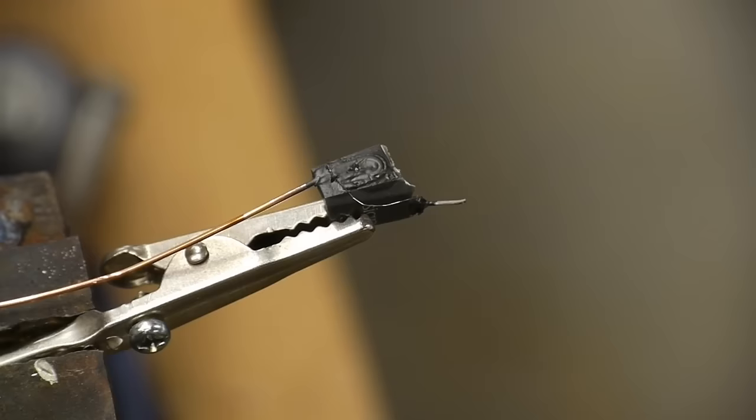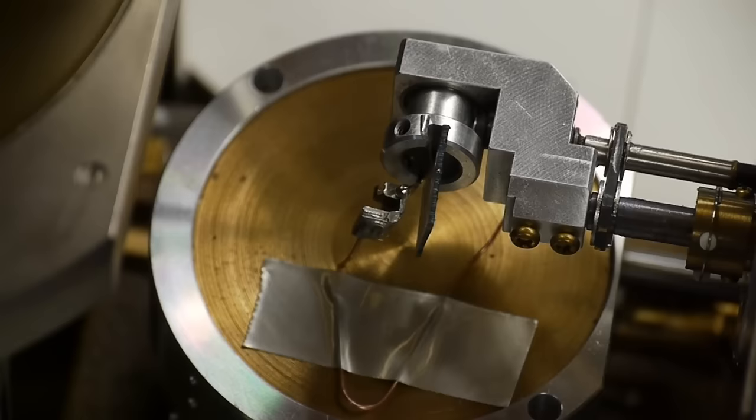Next I needed to make a sort of primitive tone arm that I could put inside the electron microscope chamber so that there would be some amount of tracking allowed, like a little bit of compliance, so that I could push the needle into the record without destroying it, but still have it follow the groove.